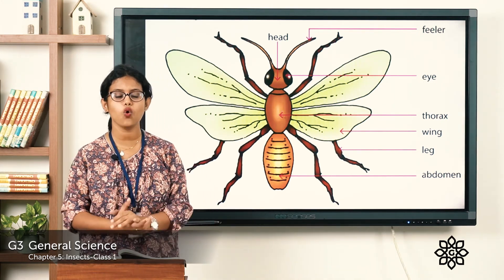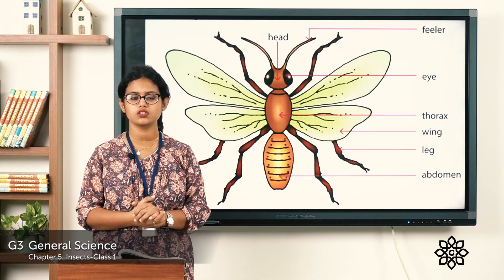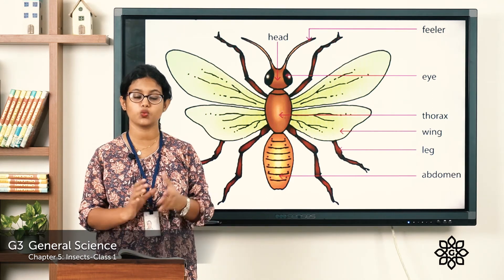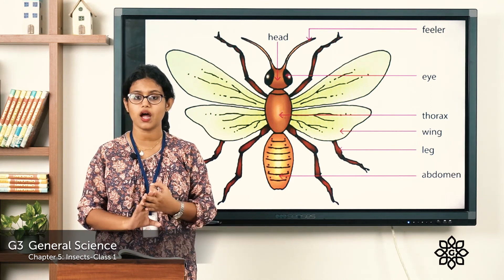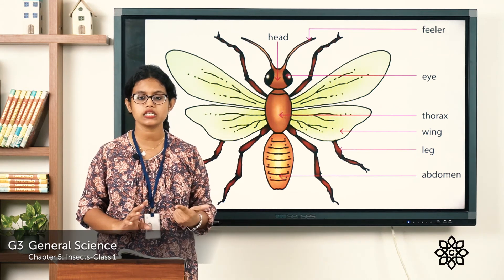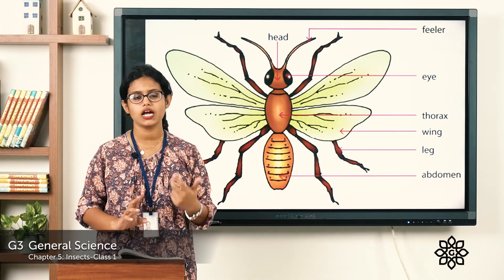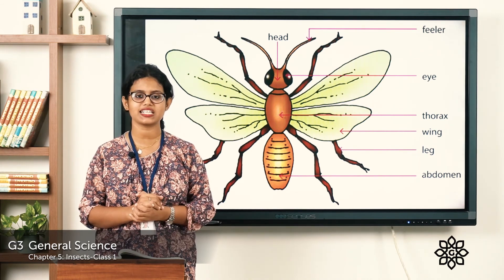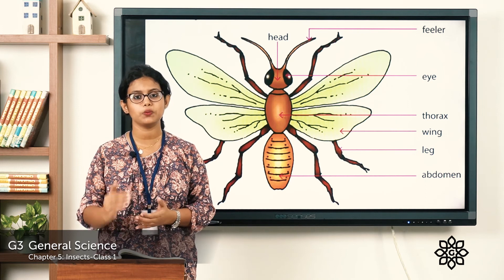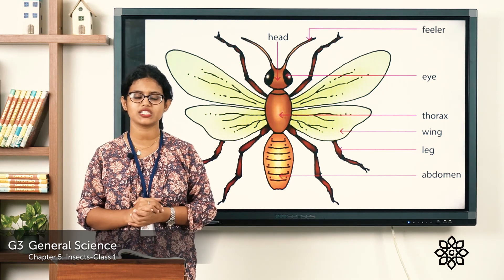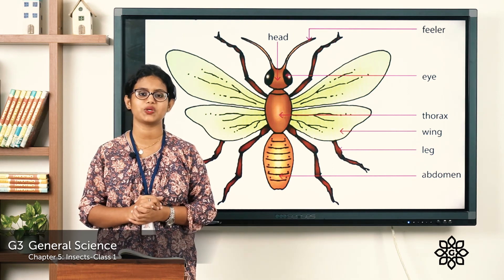I hope you understood the topic — the body parts of an insect. The three main parts are the head, the thorax, and the abdomen. We'll meet in the next class and discuss the new topic. Thank you.